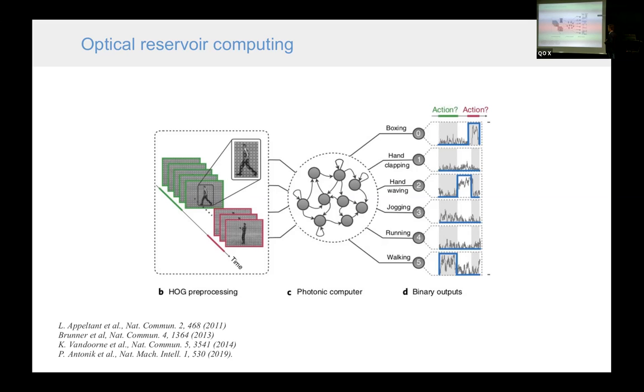And this approach was actually quite successful. And here is an example where an optical system of interconnected nodes was used for recognition of human movements, human actions, such as boxing, clapping, jogging, and so on.